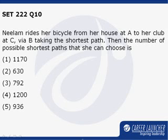Let us see this question which says Neelam rides her bicycle from her house at A to her club at C via B taking the shortest path. Then the number of possible shortest paths that she can choose is: